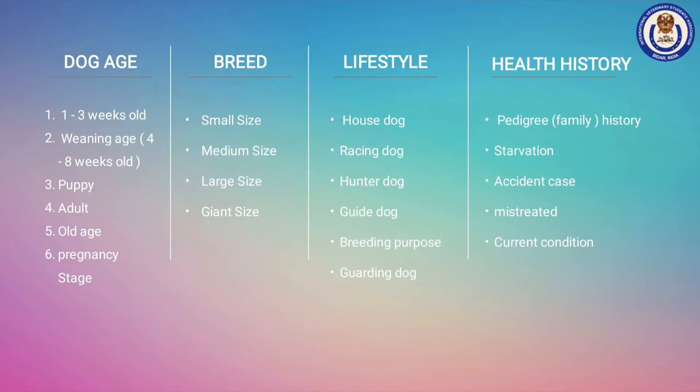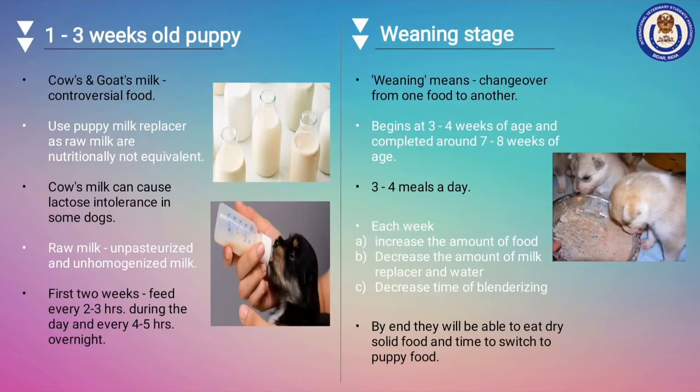With different breeds, we also see different breed sizes, and size is important when considering their diet plan. Lifestyle means in what way they are using their energy and how much. Many dogs are trained for a particular purpose, and that also needs to be considered. Every dog has some kind of health history. It is recommended that during diet planning, you consult the vet for your dog. By following these points, we can make the best diet plan for our dog.